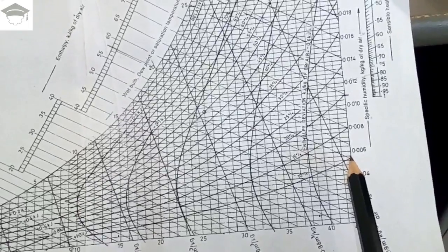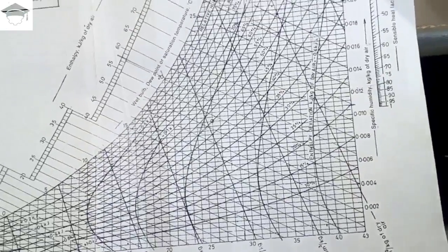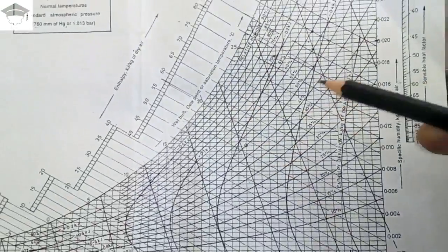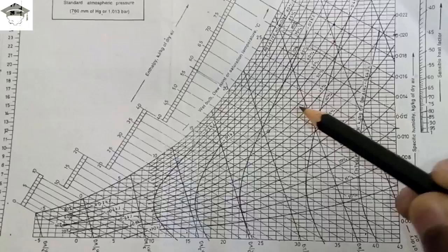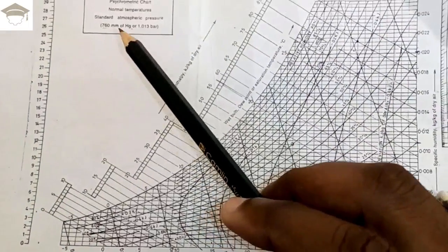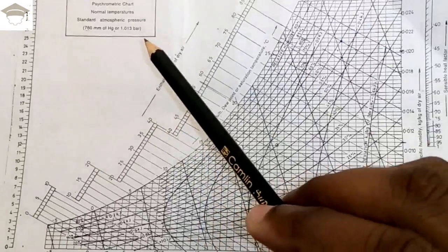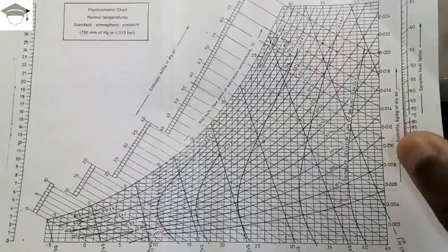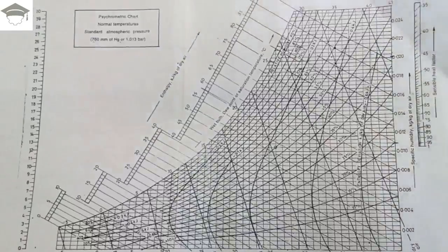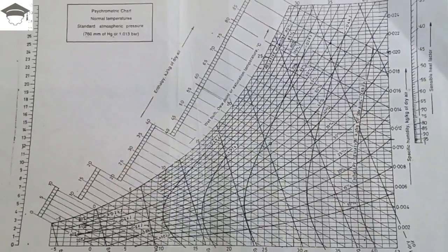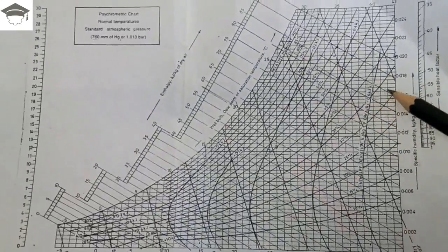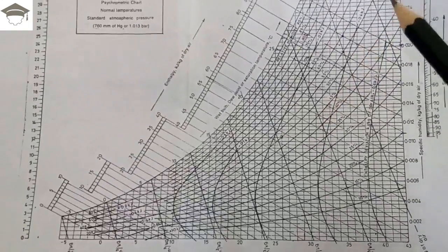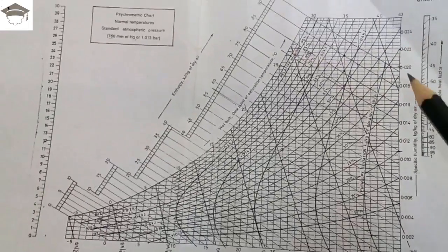You can locate points on the psychrometric chart and find various properties. Remember that the psychrometric chart is drawn for 1 atmospheric pressure — 760 mmHg or 1.01325 bar. If a question states inlet or outlet conditions at a different pressure, you cannot use the psychrometric chart. This is a common exam trick — you must use standard formulas and property relations instead.